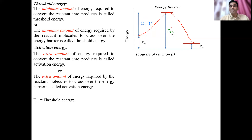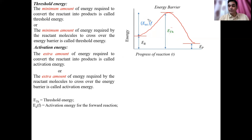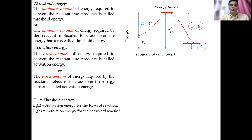Activation energy E_A(f) is the activation energy for the forward direction. If the reaction proceeds in the backward direction — meaning products convert back to reactants — then the product has energy E_P. For the backward direction, some energy is still required from outside to cross the energy barrier. That is the activation energy for the backward direction, E_A(b), required to convert product back into reactant.